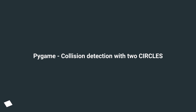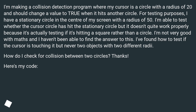I'm making a collision detection program in Pygame where my cursor is a circle with a radius of 20, and it should change a value to true when it hits another circle. For testing purposes, I have a stationary circle in the center of my screen with a radius of 50. I'm able to test whether the cursor's circle has hit the stationary circle, but it doesn't quite work properly because it's actually testing if it's hitting a square rather than a circle.